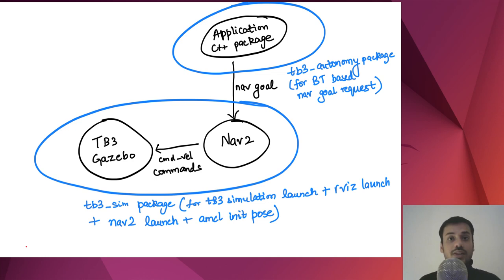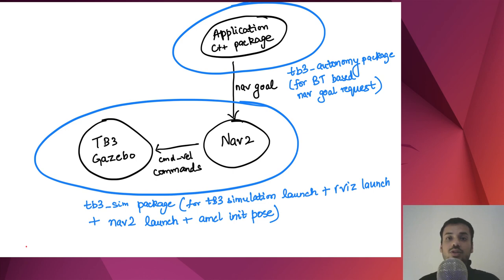In our application code package we will use a behavior tree. We will create a simple behavior tree where each leaf node would correspond to one position of the robot — four different positions in the world. Please bear in mind that this example does not change the behavior tree inside the Navigation 2 package. We are not supposed to cover that in this video. So we will create an external behavior tree — the word external is super important — which interacts with the Navigation 2 package using Navigate to Pose again and again.